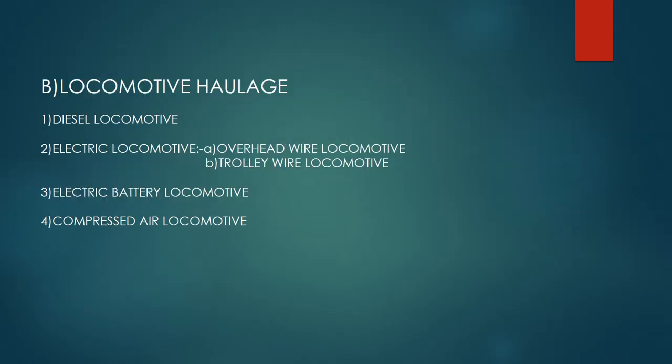Locomotive haulage: 1. Diesel locomotive. 2. Electric locomotive — A. Overhead wire locomotive. B. Trolley wire locomotive. 3. Electric battery locomotive. 4. Compressed air locomotive.